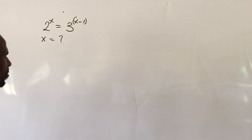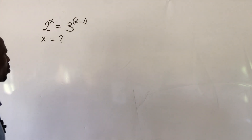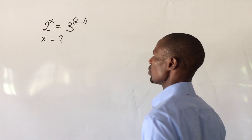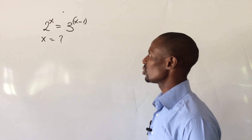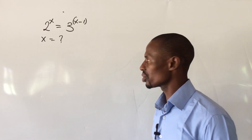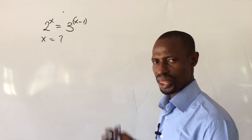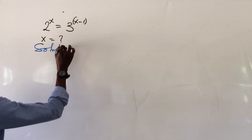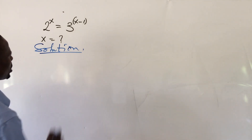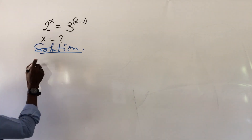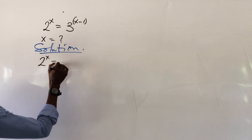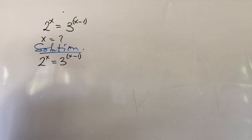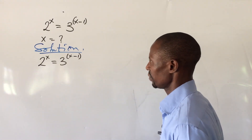Let's go into today's challenge. Today's challenge is a very simple one. The question says: 2 to the power of x equals 3 to the power of (x minus 1). What will be the possible value of x? Let's take our solution. We pull down our equation: 2 to the power of x equals 3 to the power of (x minus 1).